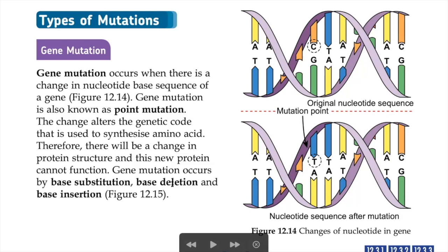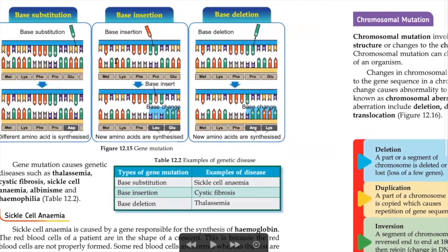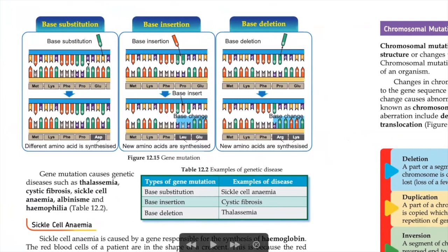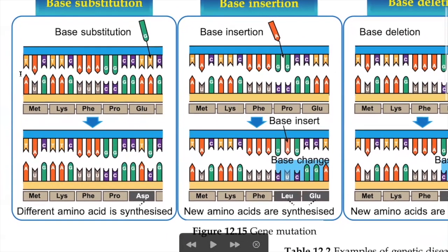Gene mutation can occur by base substitution, base deletion, and base insertion — these are three examples of gene mutation. Remember, 'base' has the same meaning as nitrogenous base. A nucleotide has three components: phosphate group, pentose sugar, and nitrogenous base. The nitrogenous bases are the four types: A, T, C, and G.